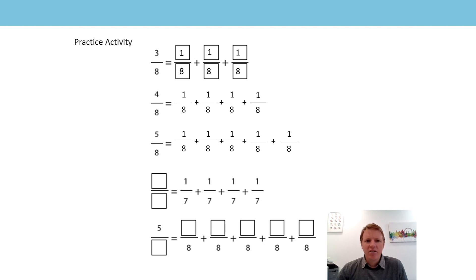Now the next one down: this time we've got sevenths. Let's see how many sevenths we've got. We've got one, two, three, four one-sevenths. That means my numerator will be four and my denominator will stay as seven.